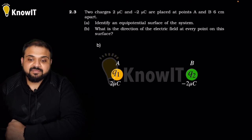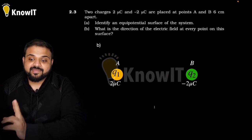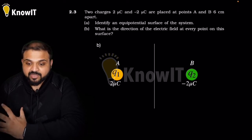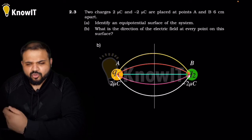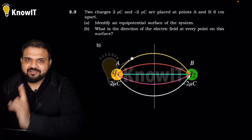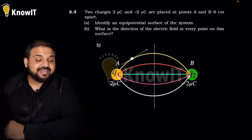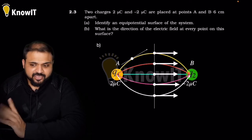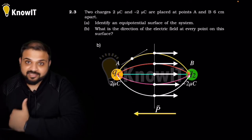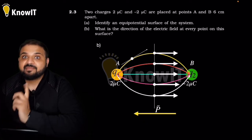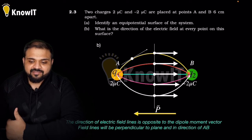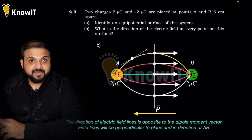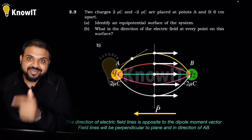Part (b): what is the direction of electric field at every point on this equipotential surface? Electric field lines go from positive to negative charge. For any point on the equatorial plane, the tangent gives the direction of electric field. The electric field on the equatorial plane is opposite to the dipole moment vector. The field lines are perpendicular to the equatorial plane and along the direction of AB.